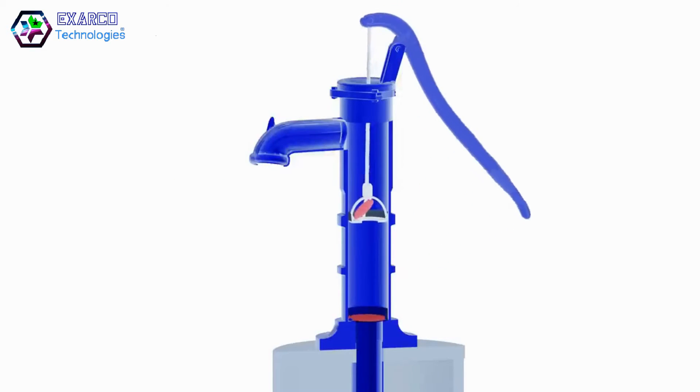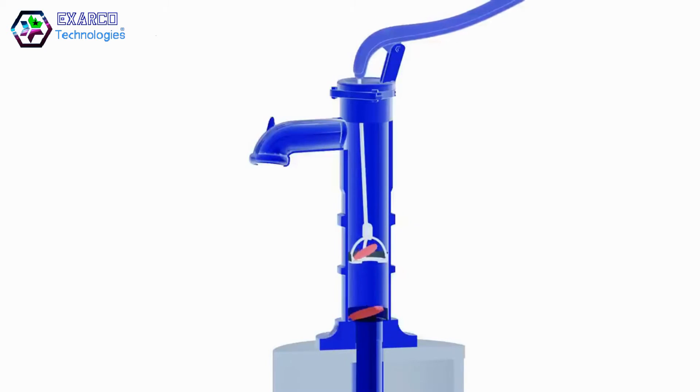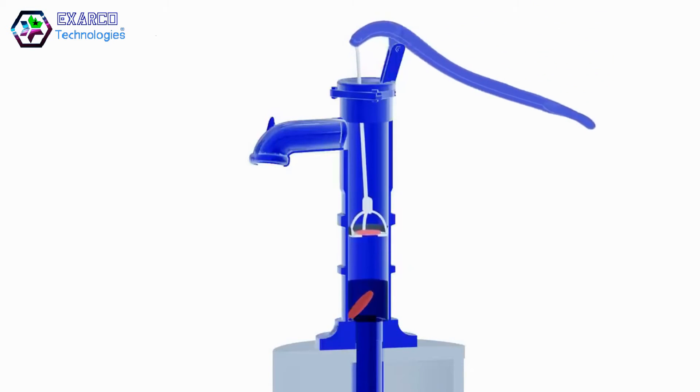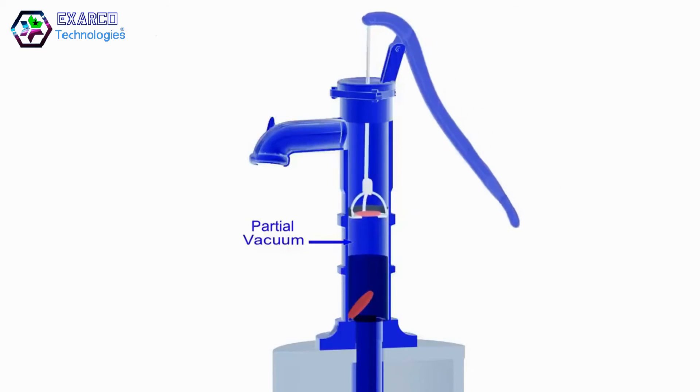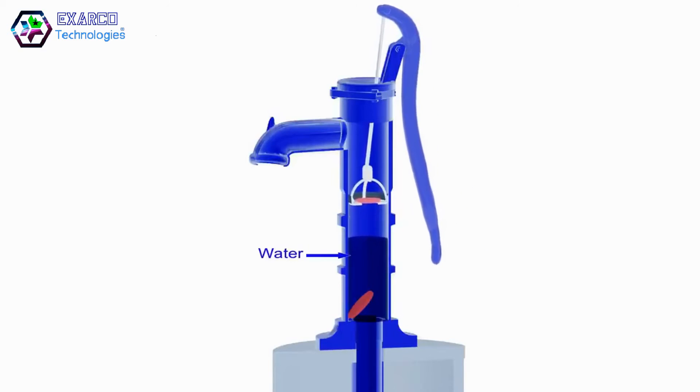The working mechanism of the pump is shown in the animation. When the handle is pushed downwards, the piston moves vertically upwards. During this cycle, the piston valve closes and the foot valve opens. This forms a vacuum below the piston valve. Then water is drawn upwards to fill the vacuum.